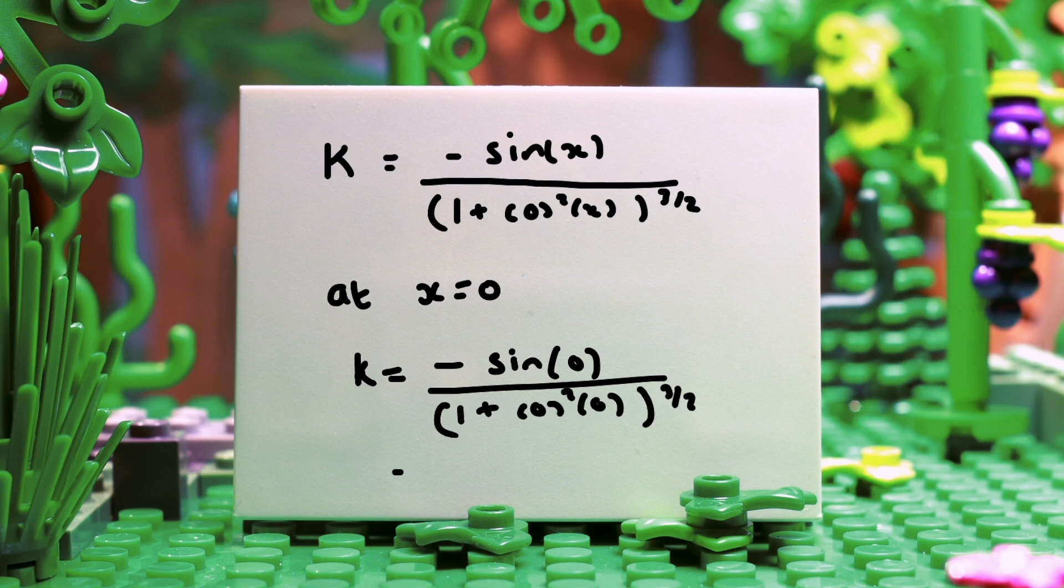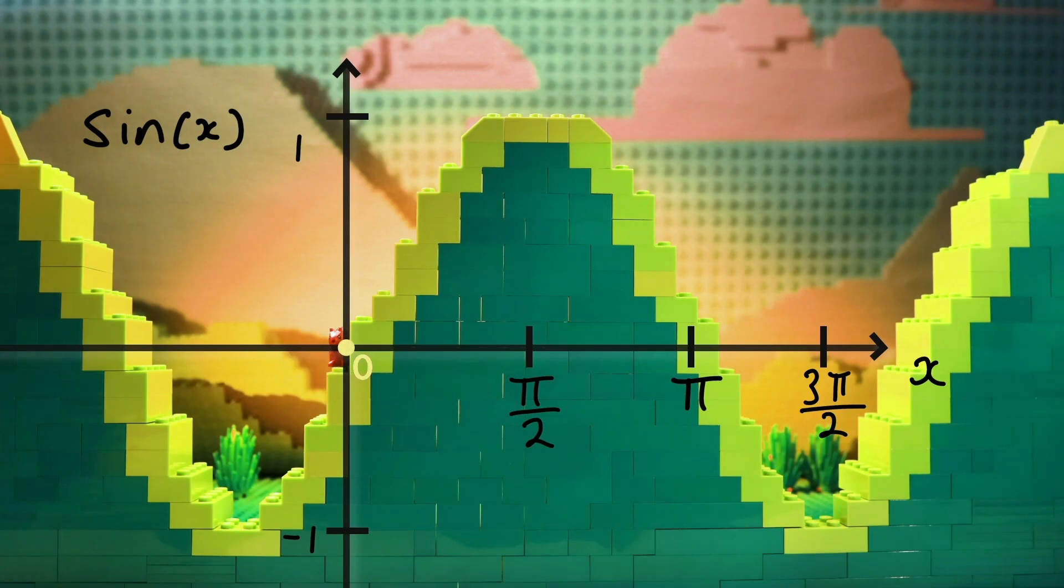Evaluating this at x equals 0 gives kappa equals 0, so at this point we have a straight line.